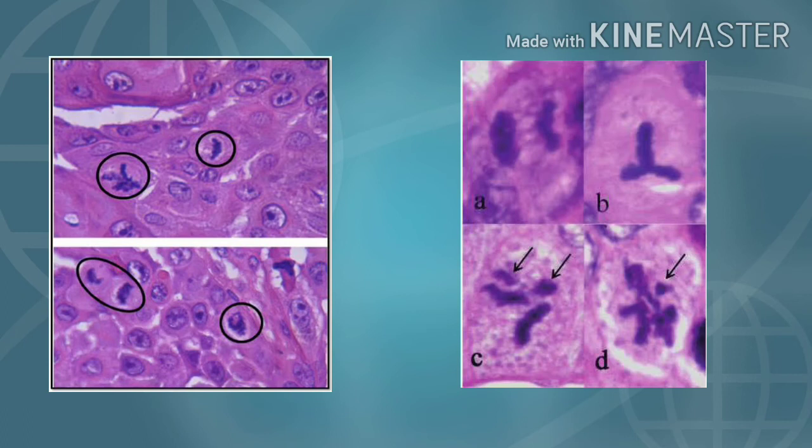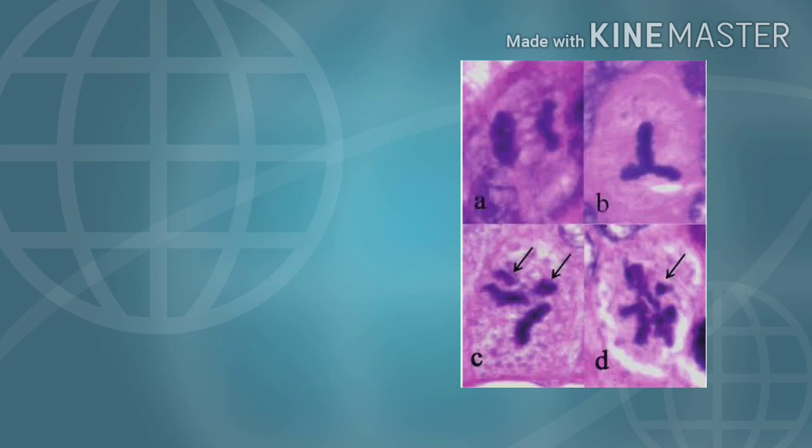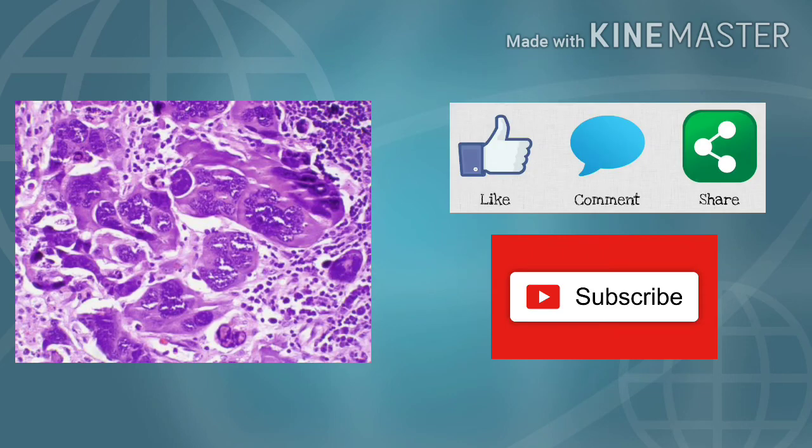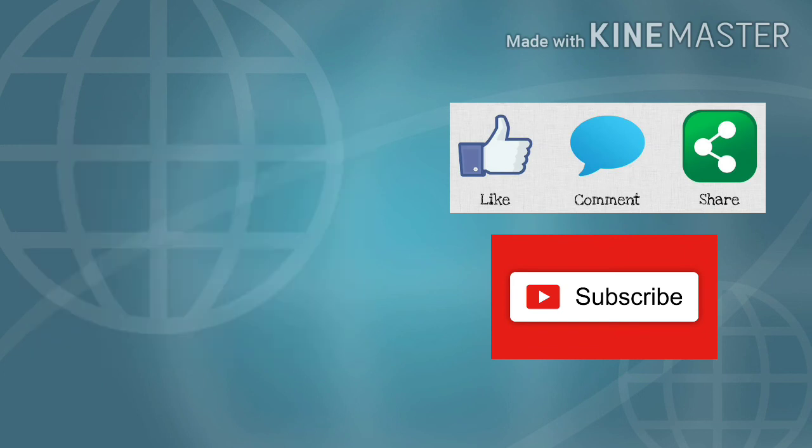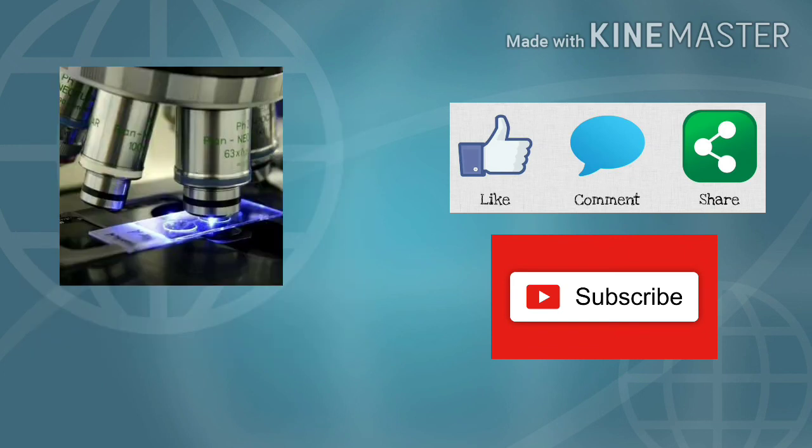With presence of abnormal, atypical, bizarre mitotic figures like tripolar, quadripolar, or multipolar mitotic figures. And there is presence of tumor giant cells. Okay, that's it for now. Thanks for watching this video, and please don't forget to like, share, and subscribe.